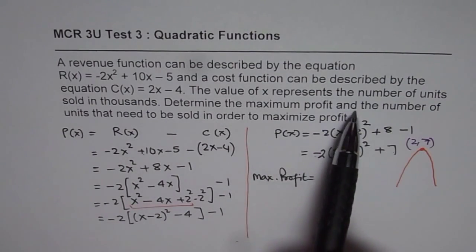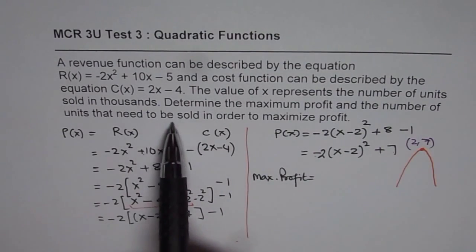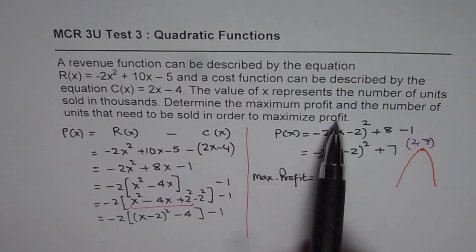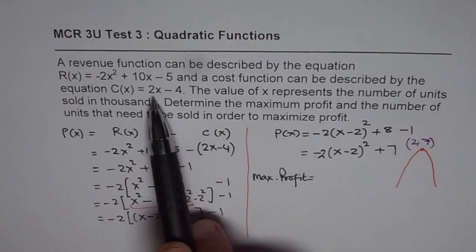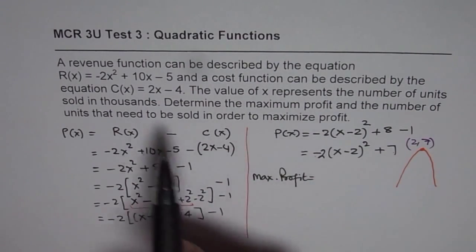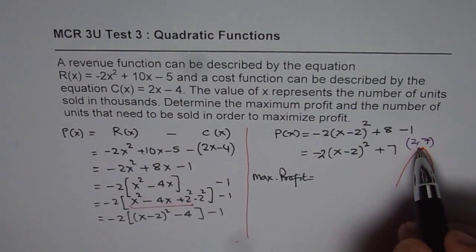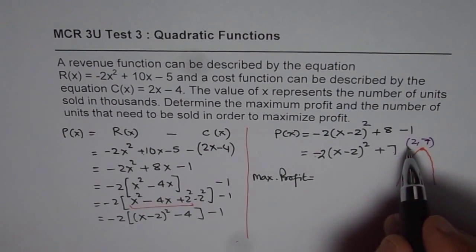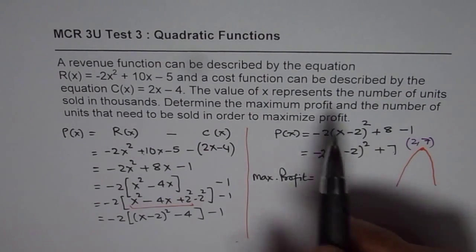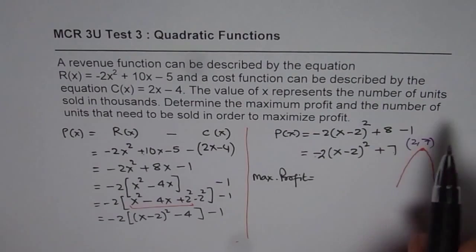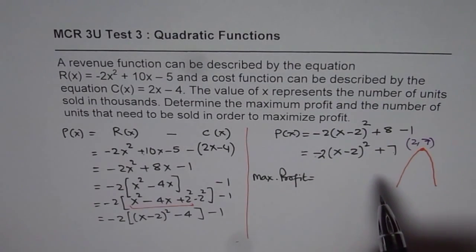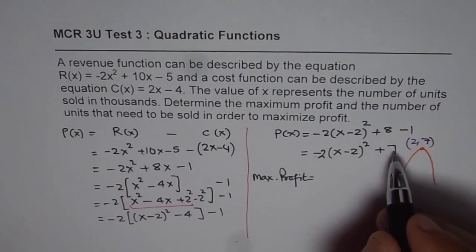Determine the maximum profit and the number of units that need to be sold in order to maximize profit. So we are assuming a dollar value here now and number is in thousands. So numbers are in thousands. So we are saying 2 units because they are not really giving us units of profit. Maybe a typing error from my side. So maximum profit is 7.